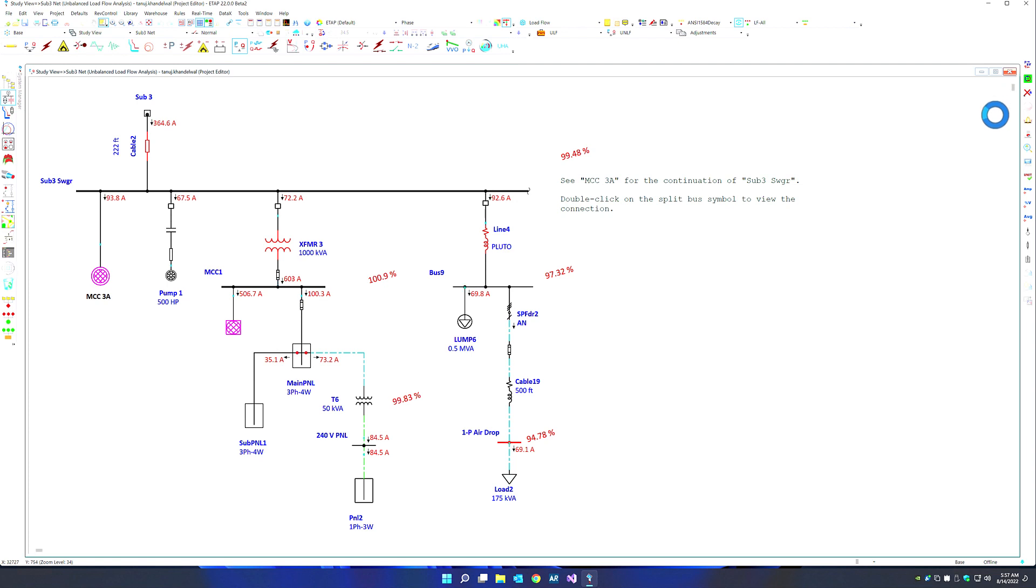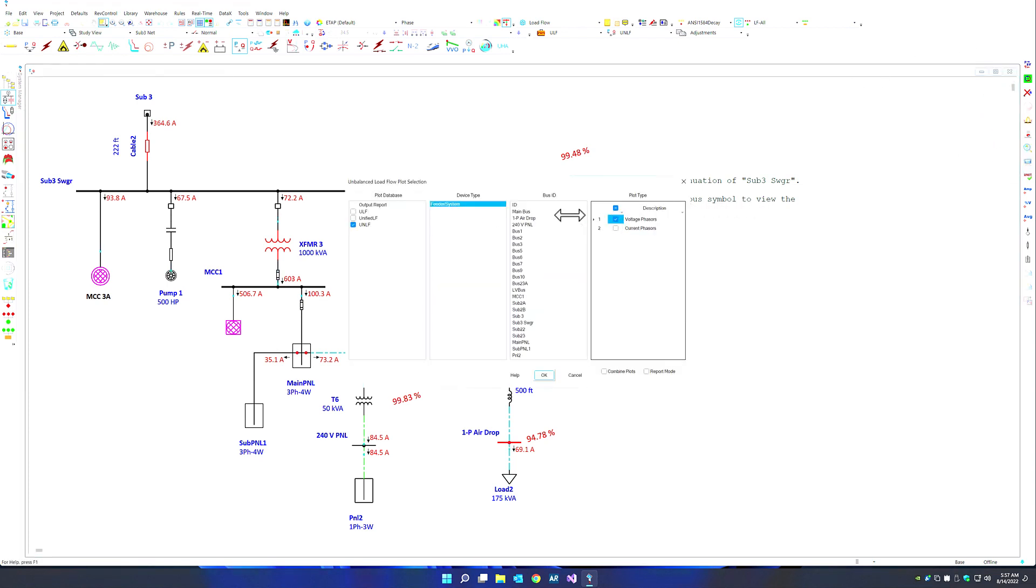We can go to the unbalanced load flow mode, run the simulation, go to our plot analyzer, and pick a three-phase and single-phase bus.